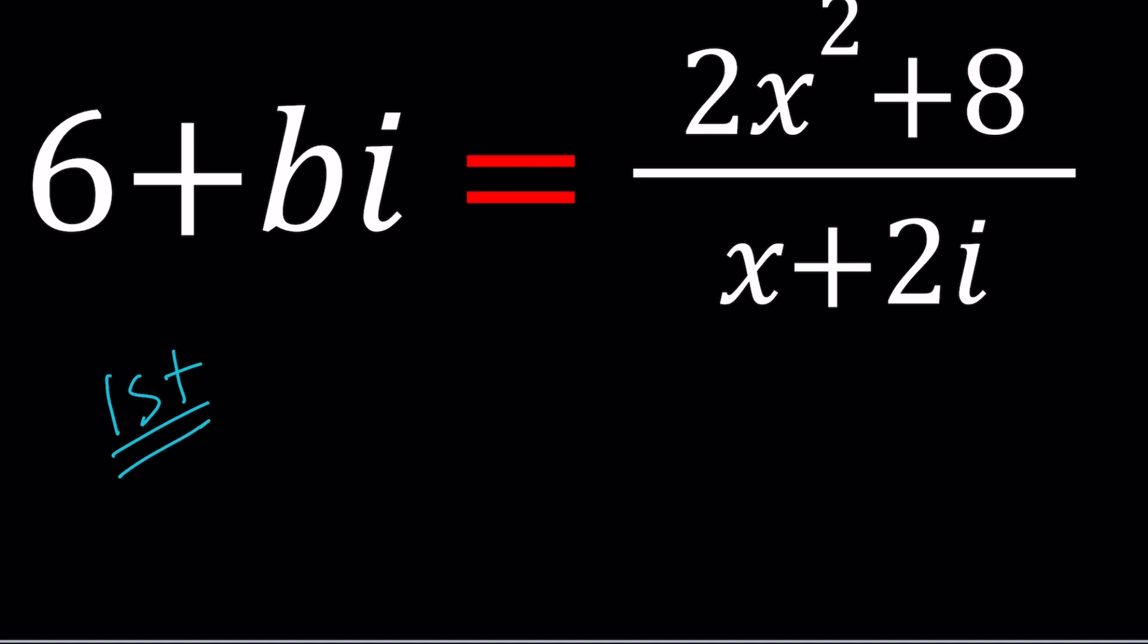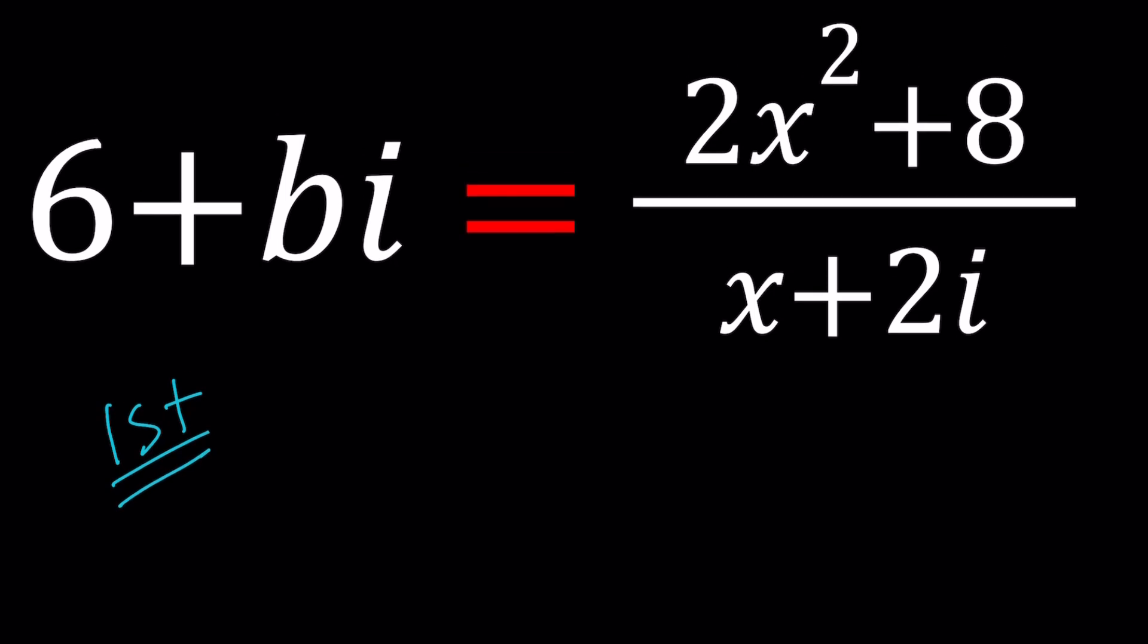For my first method, I'm going to use cross multiplication, because that is kind of obvious. So we're going to multiply 6 plus bi by x plus 2i, and that should give us 2x squared plus 8.